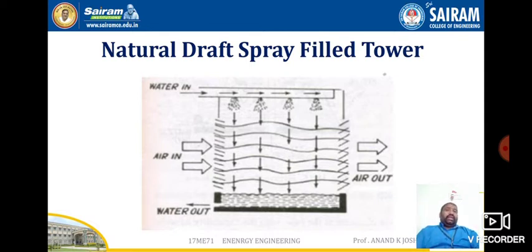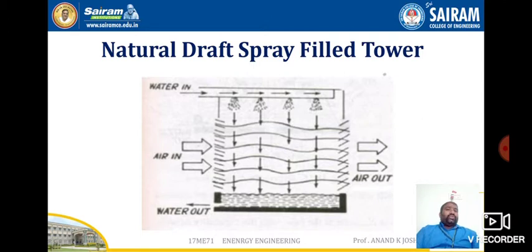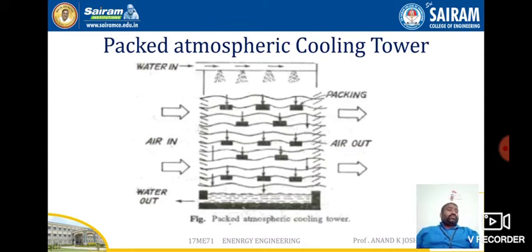Wind losses are high in the natural draft spray tower and there is no control over the outlet temperature of water. Water is sprayed at the top and air flowing due to wind causes a cooling effect, with cooled water collected at the bottom for recirculation. This type is not used for high capacity plants and is suitable only for small capacities.